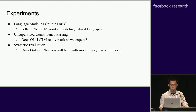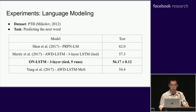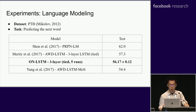To evaluate this new model, we train it on a language modeling task and evaluate on metrics including perplexity, unsupervised parsing, and syntactic evaluation. For language modeling, we use the standard PTB dataset following the preprocessing proposed in Mikolov 2012. As shown in the table, ON-LSTM outperforms AWD-LSTM, which is one of the strongest LSTM baselines. There are many recent models that achieve stronger performance than ours, but we believe those models provide orthogonal contributions relative to ordered neurons — for example, the mixture of softmax model.